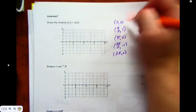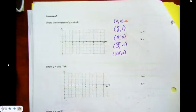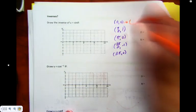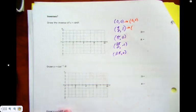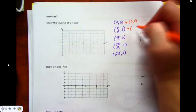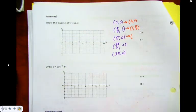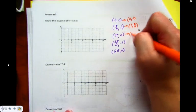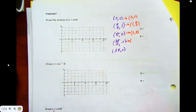What are we going to do for the inverse? Switch it. Zero, zero becomes zero, zero. Pi on two, one becomes one, pi on two. Pi, zero becomes... Three pi on two, negative one.